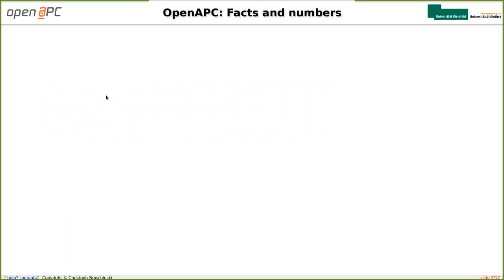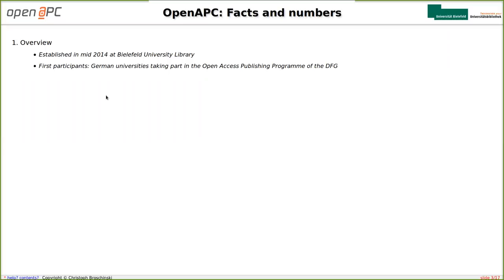Now for some facts and numbers on OpenAPC. OpenAPC was established in 2014 at Bielefeld University Library. The first participants were German universities taking part in the open access publishing program of the DFG, the German Research Society. Some people in our library thought: there are universities in Germany taking part in this publishing program, and they are all required to report their funded articles back to the DFG anyway — so why not ask these universities if they would share their article lists with us and establish an open data project? Several universities agreed, sent their data to us, and this was the start of the OpenAPC project.